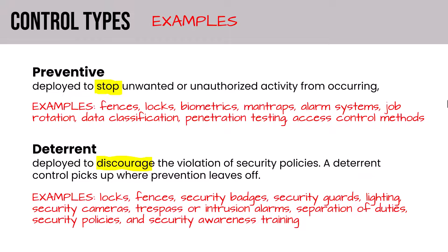Do you notice the overlap in control types? Every security control will generally fall into one control category, but will map to multiple control types. That lock, while preventive, is also a deterrent — it is a psychological barrier. Locks create a visible and tangible barrier. Even if the lock is unlocked, a padlock hanging on a gate sends a signal that not just anybody should be walking through there, and conveys increased perceived effort when locked, making the would-be trespasser think twice.